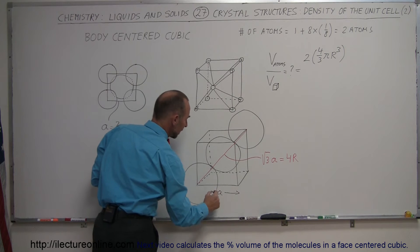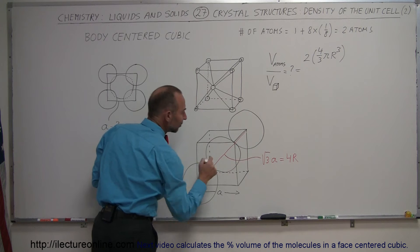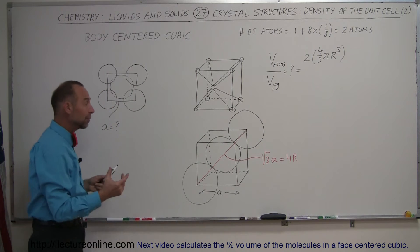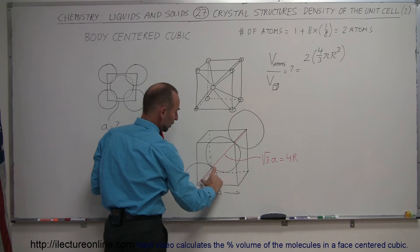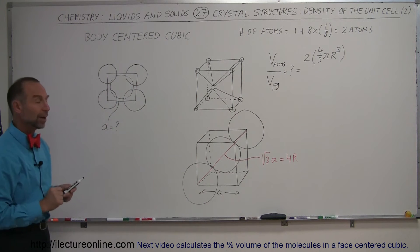If the side is equal to a, then the diagonal from one corner across to the other corner is the square root of three times a. And that will have to be equal to four times the radius of an atom: one r, two r, three r, and four r. So the square root of three times the side equals four times the radius.